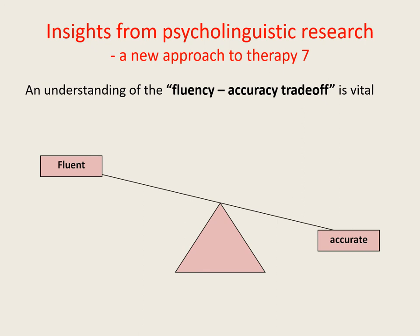Of course, it would be nice if we could be both fluent and accurate at the same time. However, because our speech production systems do not function as well as those of people who don't stammer, that's not always possible. So sometimes we need to make a compromise. By and large, speech errors are less of a problem than disfluencies. Therefore, by focusing simply on maintaining the forward flow of speech without worrying about accuracy, the benefits of the increased fluency more than outweigh any negative consequences from the increased number of speech errors we may produce.